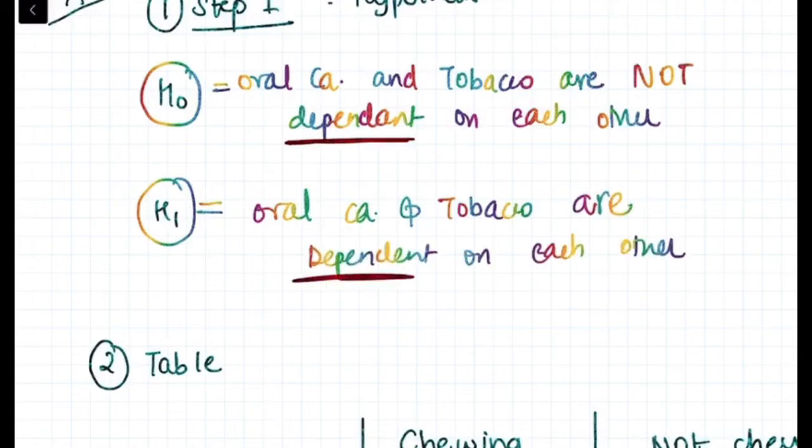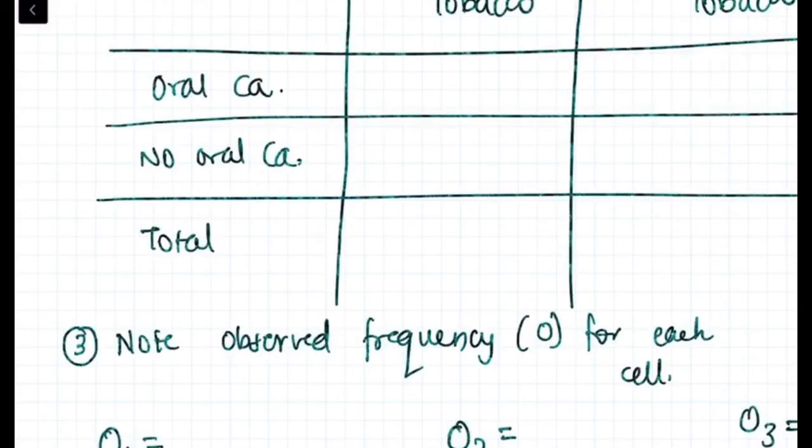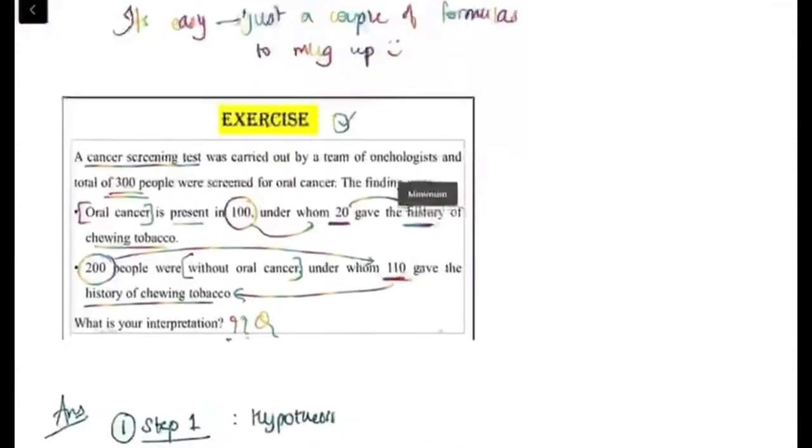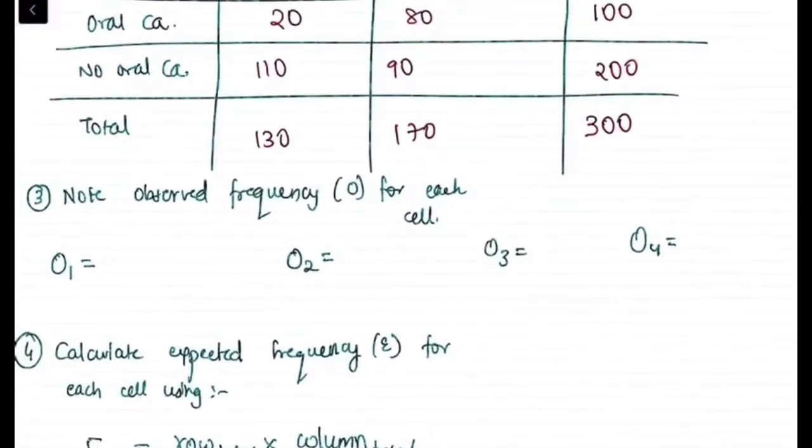Second one is table. Chewing tobacco, not chewing tobacco, oral cancer, non-oral cancer, and total. Total 300 people we know. 100 with oral cancer, 200 without oral cancer. Chewing tobacco 20, 80. Not chewing tobacco 80, then 190. Fill up the data in the table.